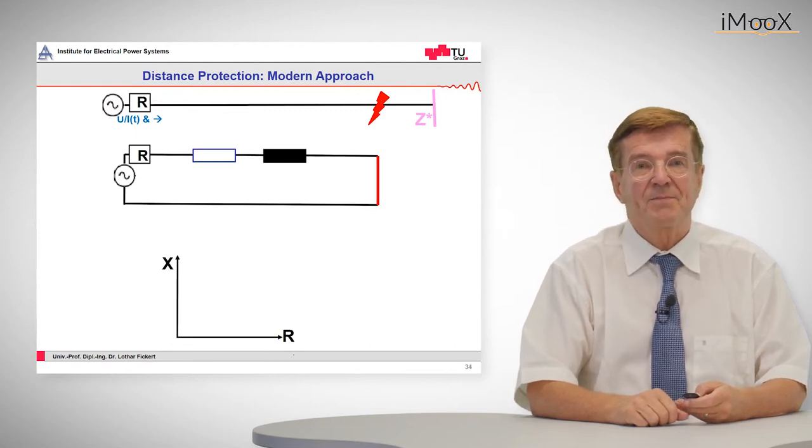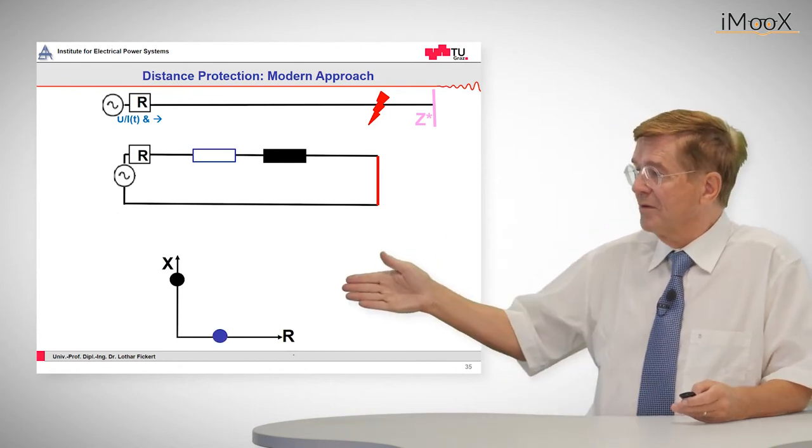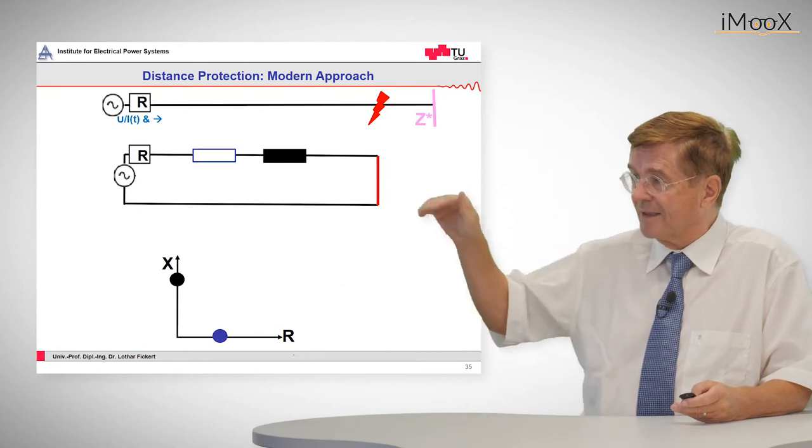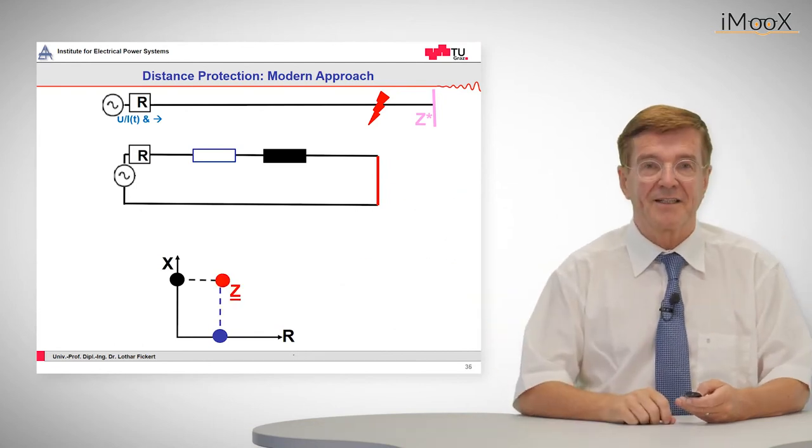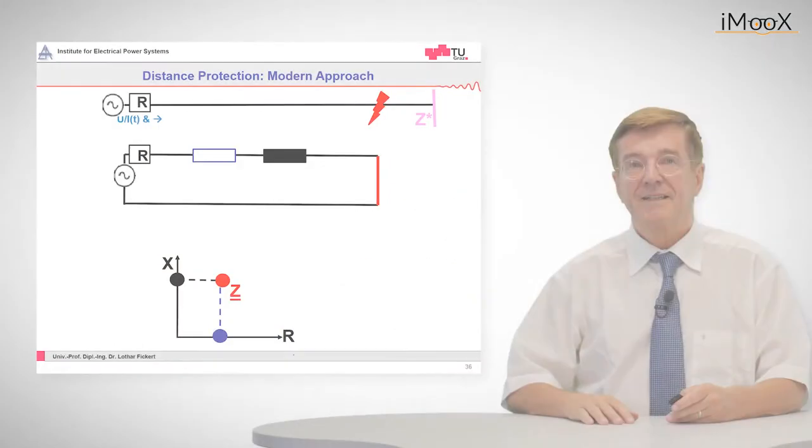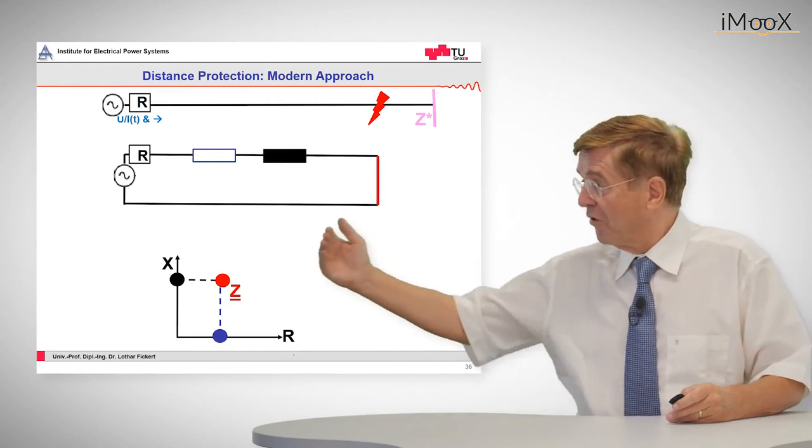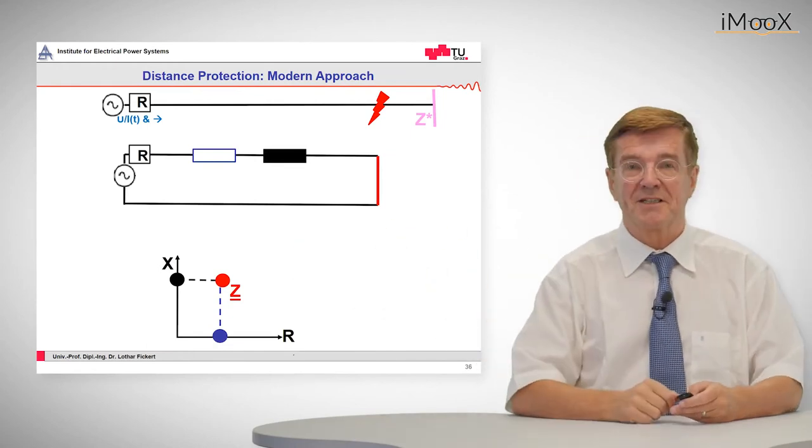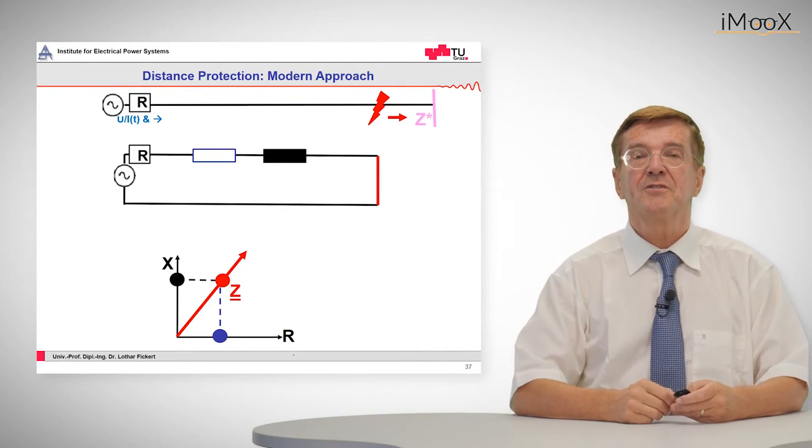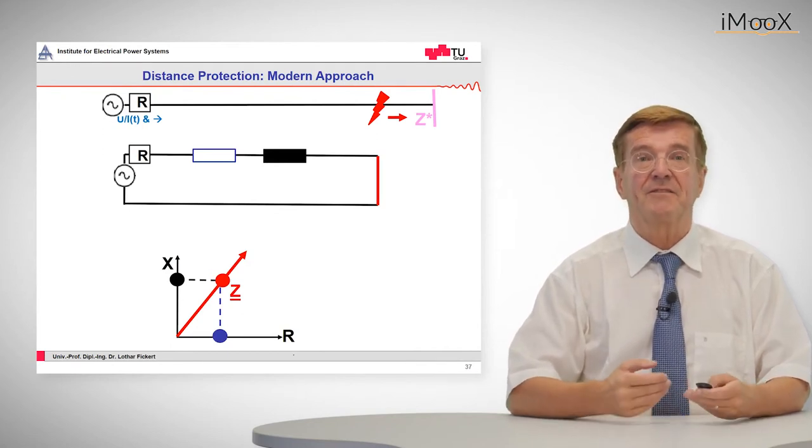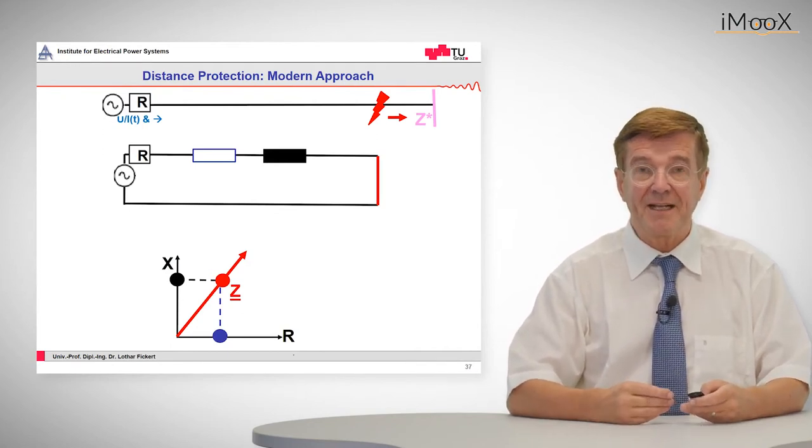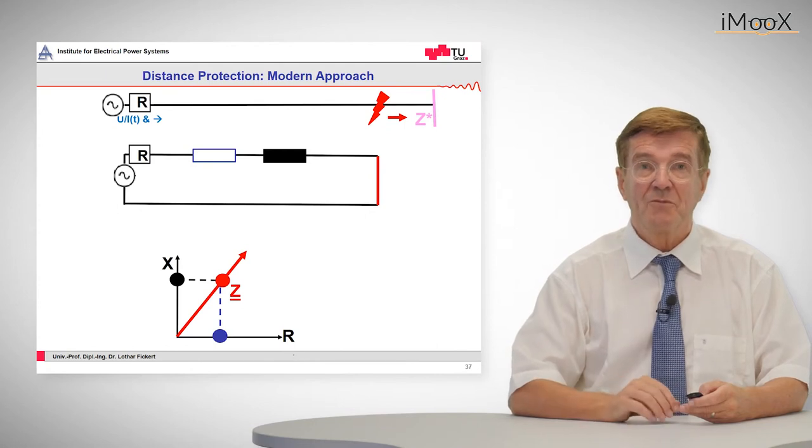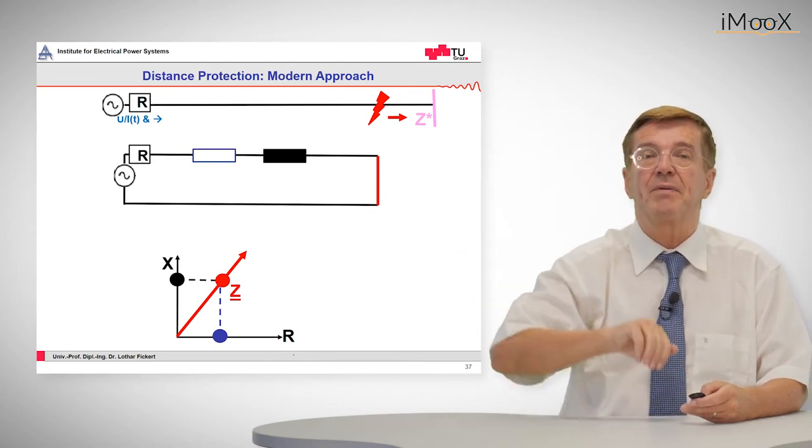Now in the impedance plane this is represented by two points, the blue is the resistance and the black is the reactance and together they add up to the impedance. Now if the fault point moves forth and back from this position then also the R and X vary but they vary in the same ratio and that means that this fault point moves along the so-called impedance line.